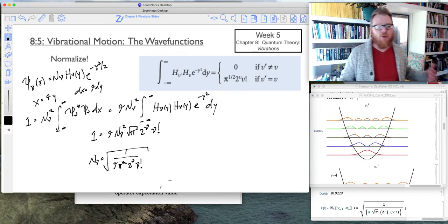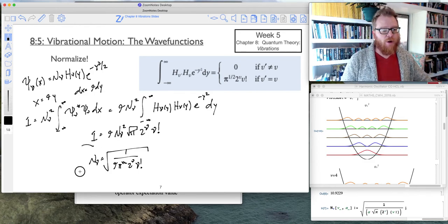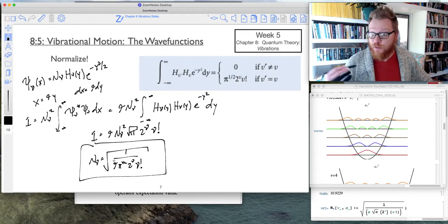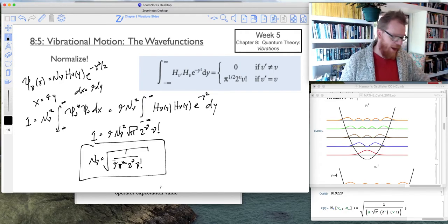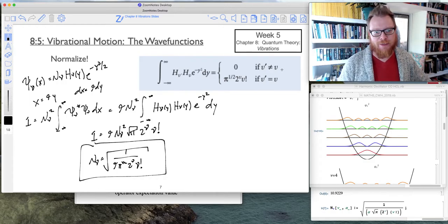So this becomes our normalization constant. And what's important to note, it contains that alpha term, which gives us our displacement scale.